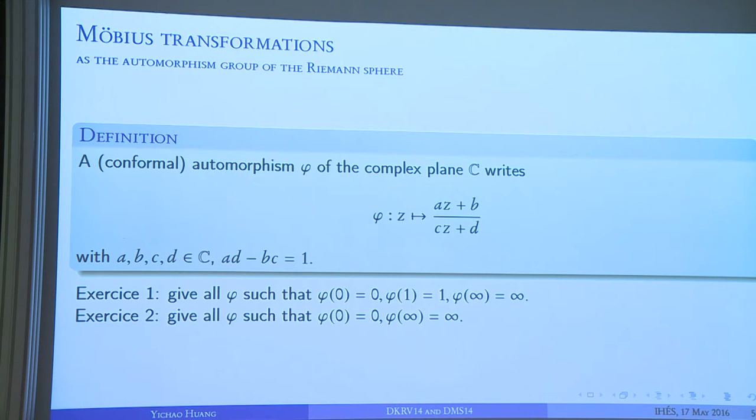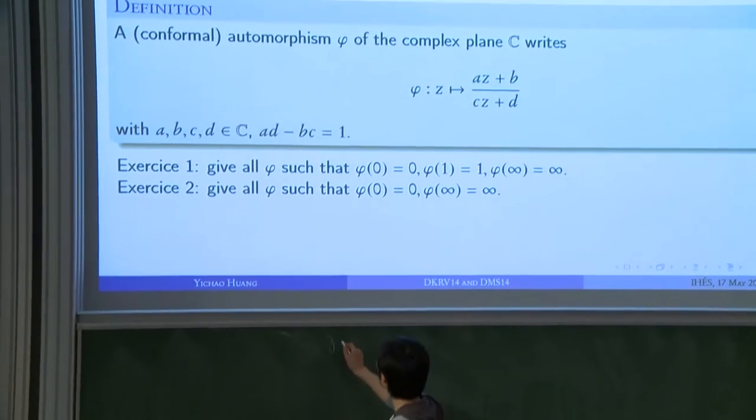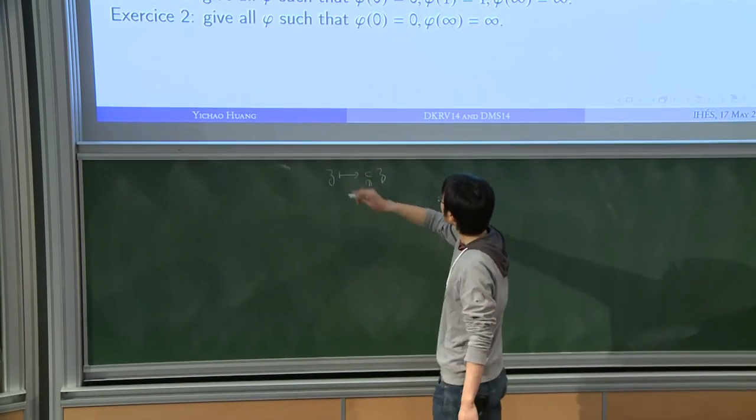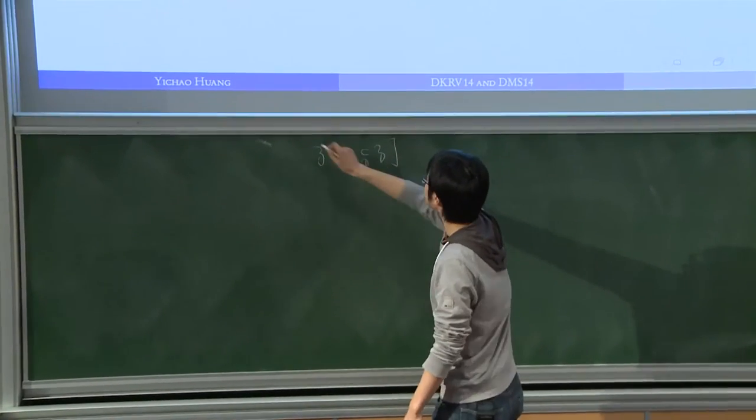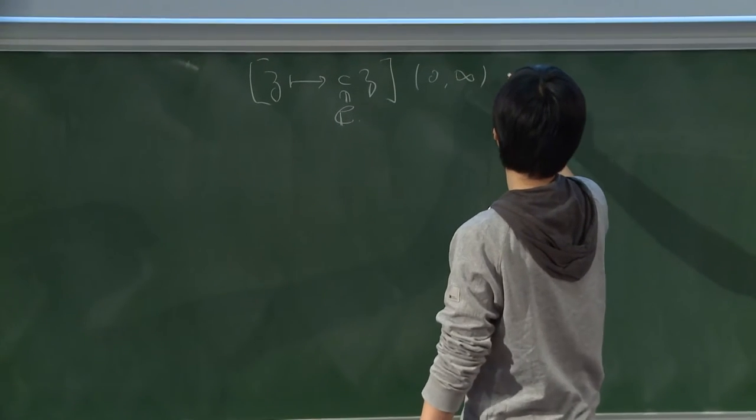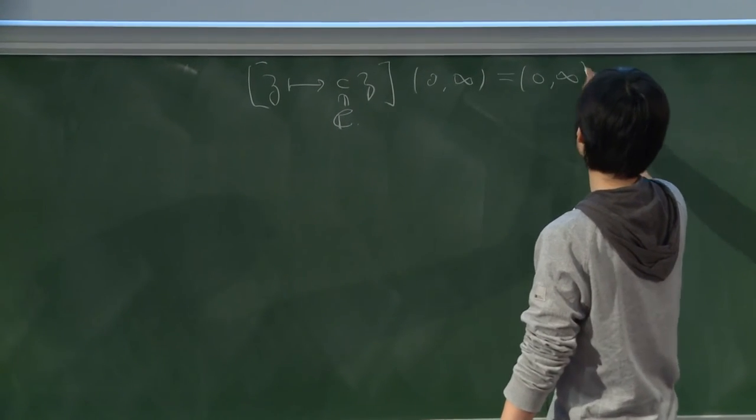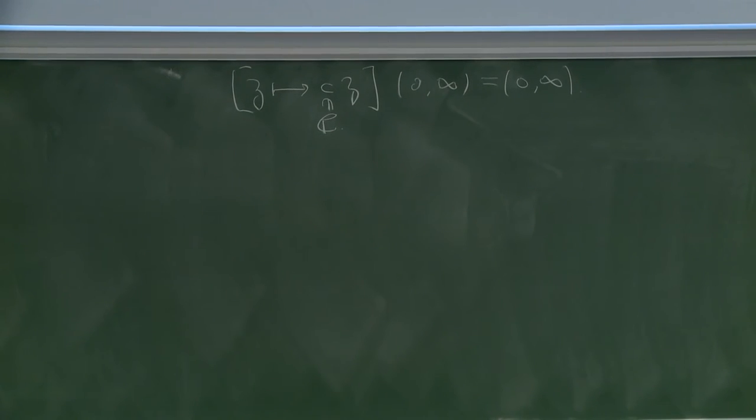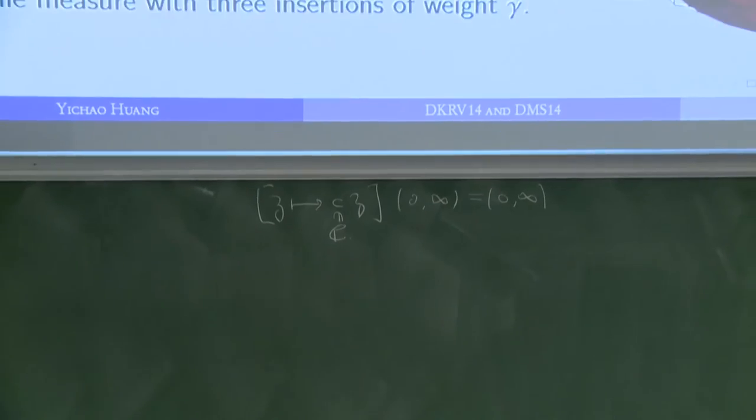Solution to the second exercise: if you want to fix two points on the sphere, you have a family of applications. For example, all applications of this form will fix two points to zero and infinity. So I have a large family of applications. That will be useful very soon.